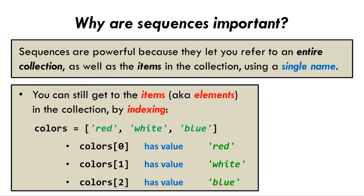You can still get to the items of the collection by indexing, like this. Colors[0] refers to the beginning item of the sequence, here the string red. Colors[1] refers to the next item of the sequence, here the string white. And colors[2] refers to the item after that, here the string blue.